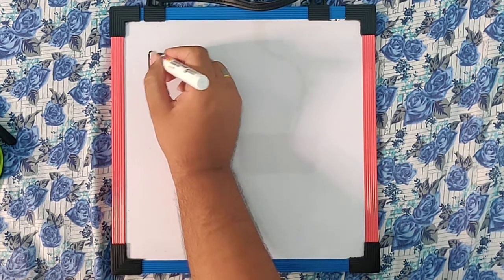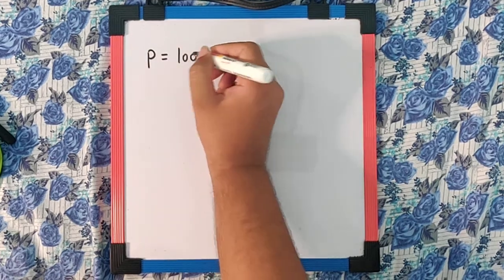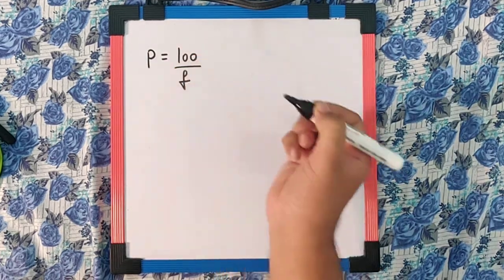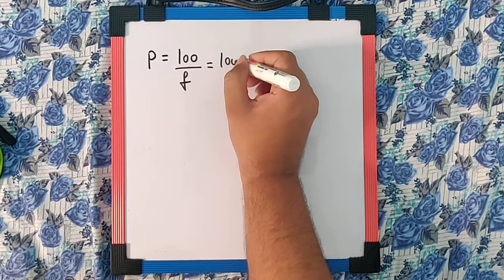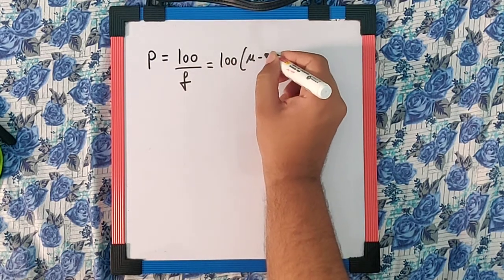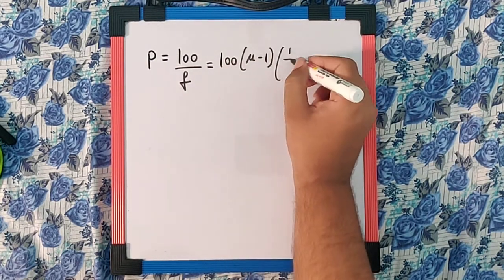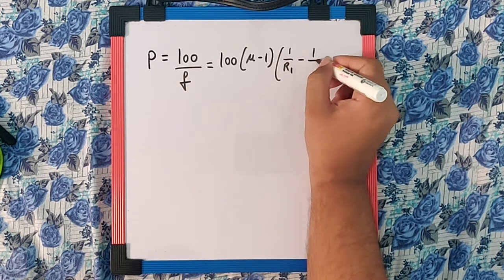The next question says if R1 and R2 are the radii of curvature of a double convex lens, which of the following will have the largest power? Now we can say the power is 100 upon F if F is in centimeter, which is equivalent to 100 into mu minus 1 into 1 by R1 minus 1 by R2.